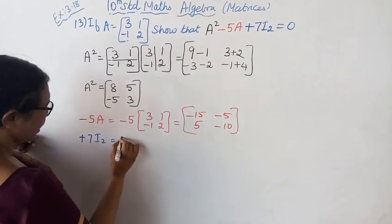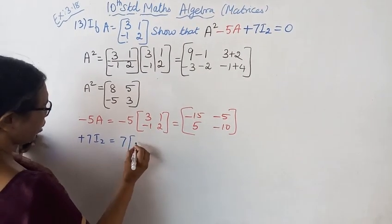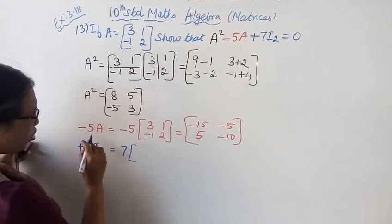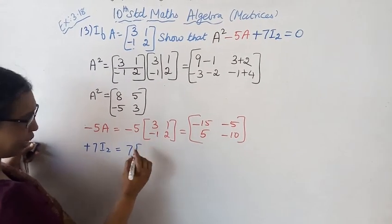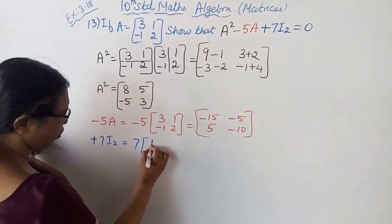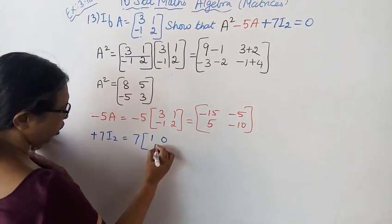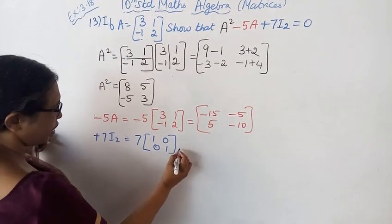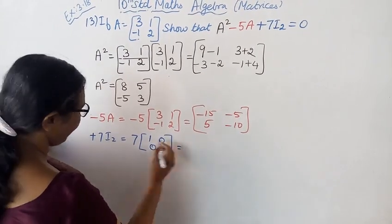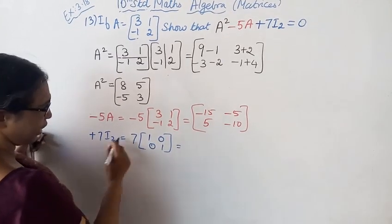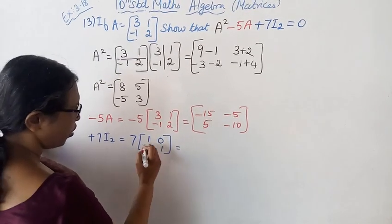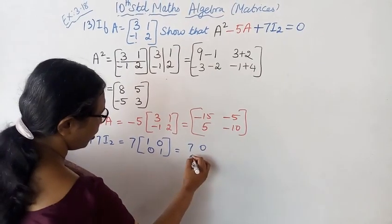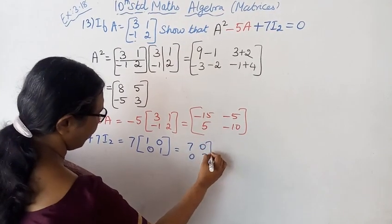Now we add 7I₂. I₂ is the 2×2 identity matrix with two rows and two columns: [[1, 0], [0, 1]]. So 7 times I₂ equals [[7, 0], [0, 7]].